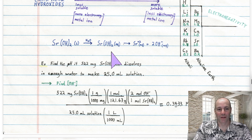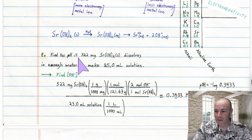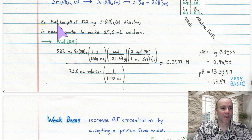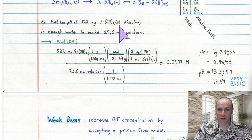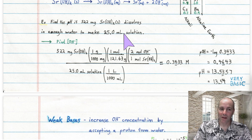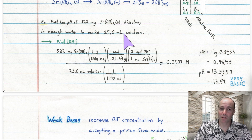Let's calculate the pH of a strontium hydroxide solution — a tough one. Find the pH when 522 milligrams of strontium hydroxide solid dissolves in enough water to make 25 milliliters of solution. If you remember the last video, you could first determine the pOH, since pH plus pOH equals 14. When dealing with bases, it's usually easier to figure out the pOH, because bases tell you about hydroxides.